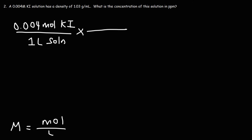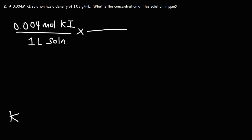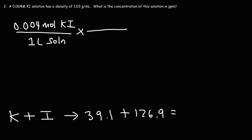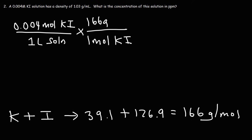In the next step, we're going to convert from moles of KI to grams of KI, and for that we need the molar mass of KI. According to the periodic table, potassium has an atomic mass of 39.1 and iodine has an atomic mass of 126.9. Adding these together gives a molar mass of 166 grams per mole, so one mole of KI has a mass of 166 grams.